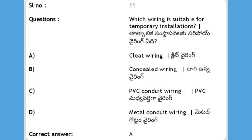Next, which wiring is suitable for temporary installations? Options: A) cleat wiring, B) concealed wiring, C) PVC conduit wiring, D) metal conduit wiring. The answer is A, cleat wiring.